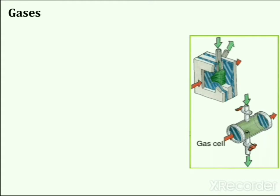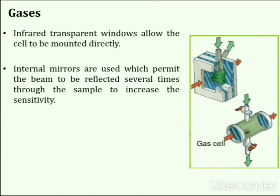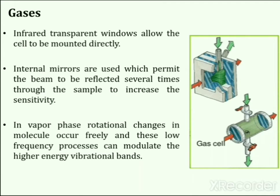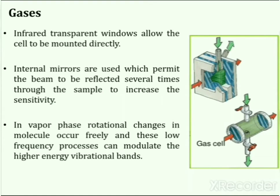For gas samples, the gas sample is inserted into a gas cell which is then mounted between infrared-transparent windows. Internal mirrors are used which permit the beam to be reflected several times through the sample to increase sensitivity — the more the number of reflections, the greater the sensitivity, as it increases the chances of interaction of IR radiation with the gas sample. In the vapor phase, rotational changes in the molecule occur freely, and this low-frequency process can modulate the higher energy vibrational bands.